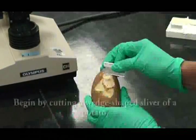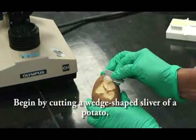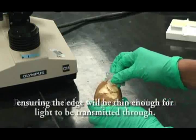Begin by cutting a wedge-shaped sliver of a potato, ensuring that the edge will be thin enough for light to be transmitted through.